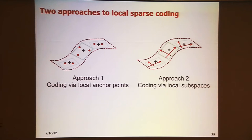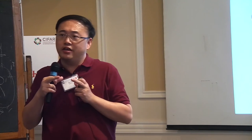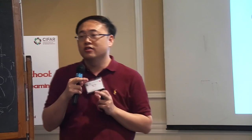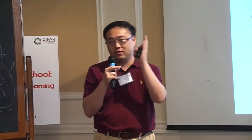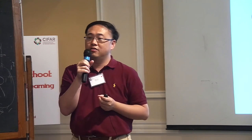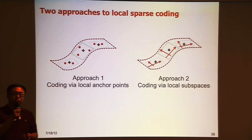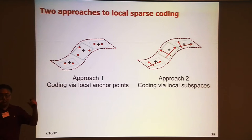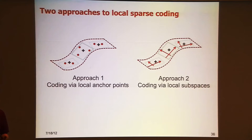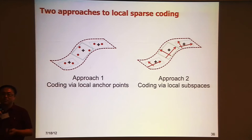The first approach is like the example I just mentioned: suppose all the bases in your dictionary are local anchor points, and to encode each data point, you activate the local neighboring anchor points. That's approach one. The other approach is: in each local neighborhood, you find a local coordinate system — not necessarily anchor points, but like dimensions or local PCA. To encode a data point, you first activate the local coordinate system, and other coordinates remain zero. This way you also achieve sparsity.